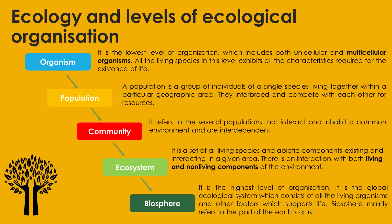Now, these different communities or populations will need to interact with non-living things — with water, for example, and with sunlight. Where there is this interaction between living things as well as non-living things, we refer to it as an ecosystem. Then we have the highest level of organization: the global ecological system, which consists of all living organisms and other factors that support life, including the atmosphere, the oceans, and everything that forms part of the Earth's crust.